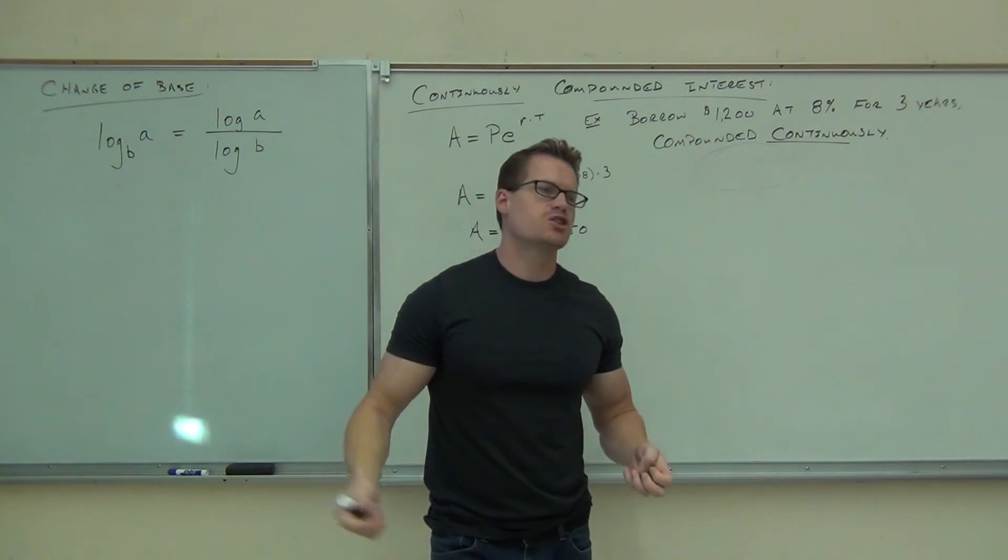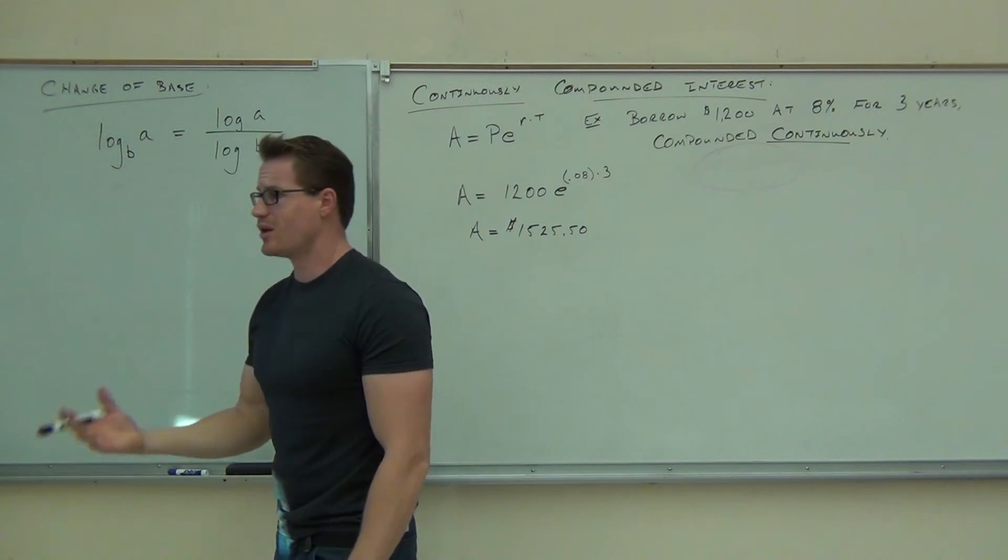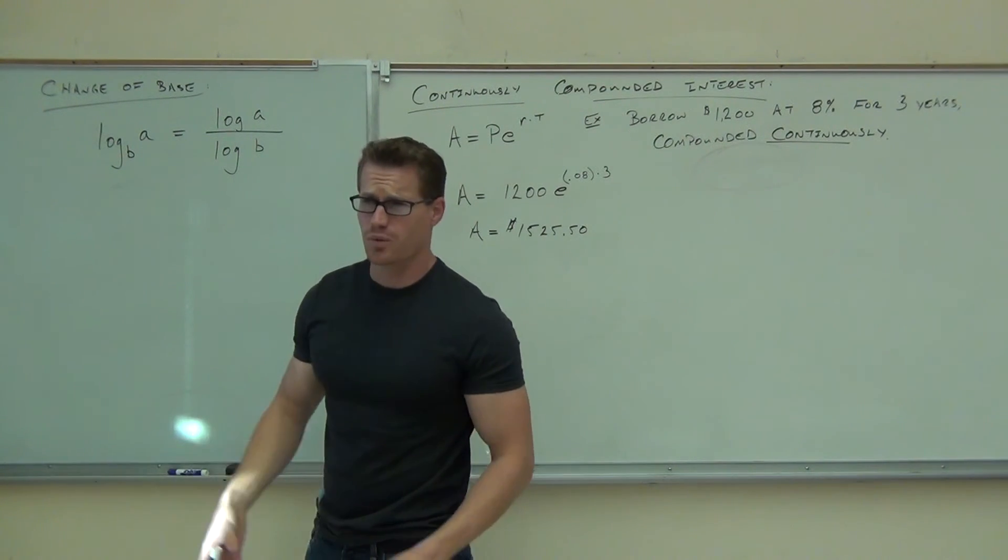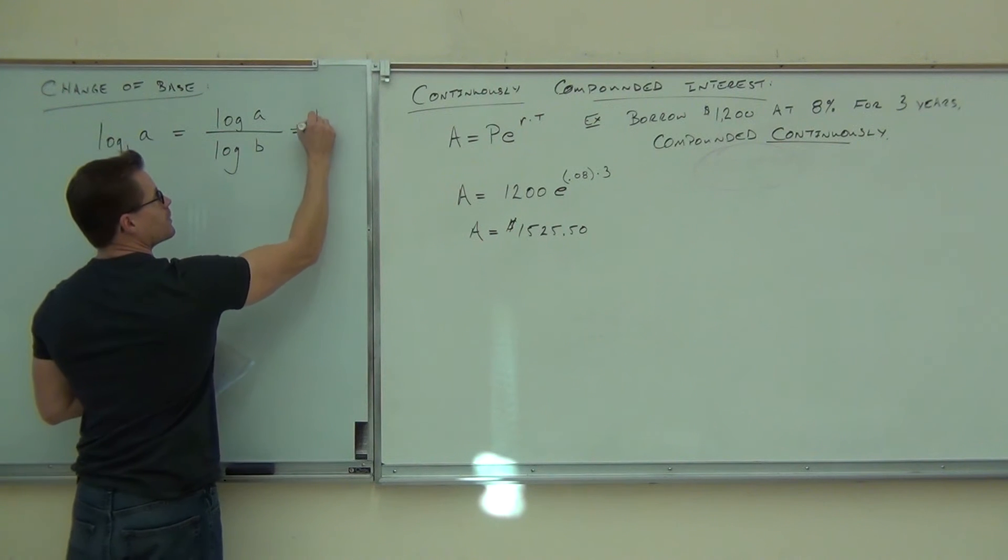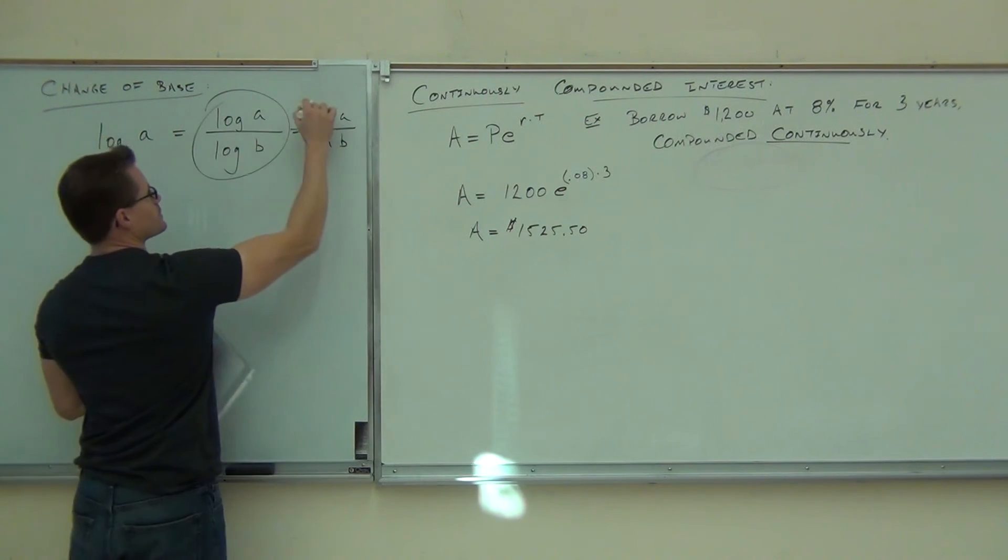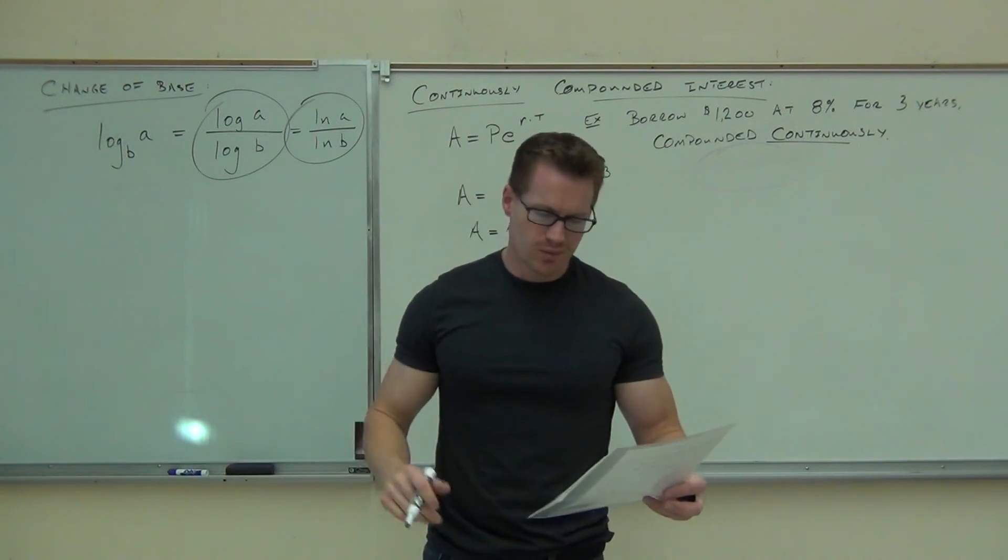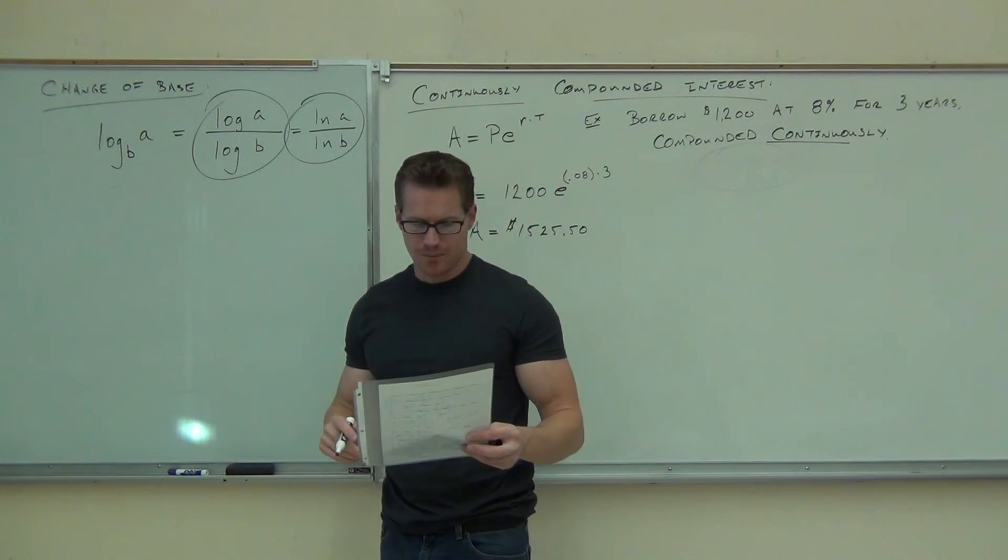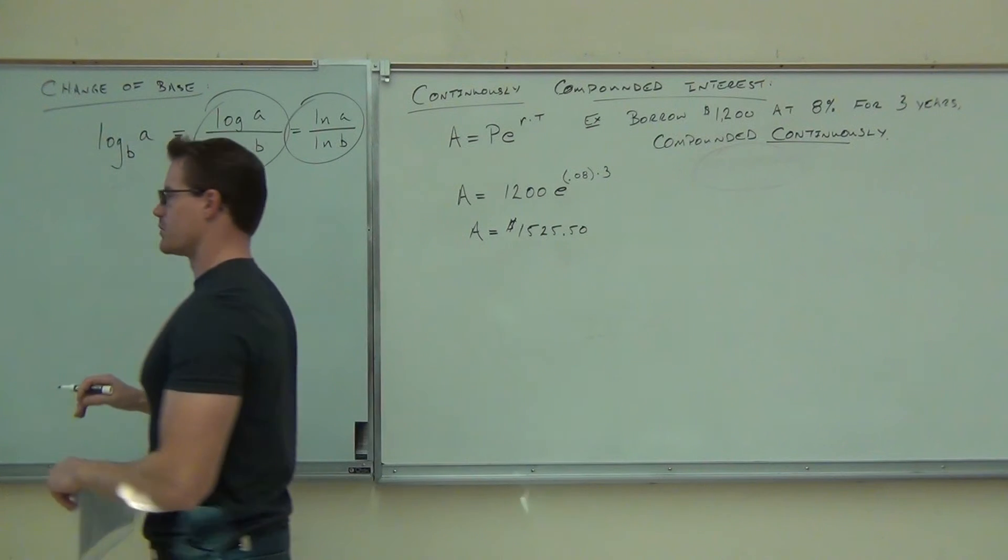You could also change to ln if you want. You're probably not going to choose to change to something like log base 8. I mean, you can't really work with that that well. So it's either this one or this. Either one of these two things. And you know what? They're going to work out exactly the same. So let's go ahead and we'll just do one very quick example. Let's do log base 7 of 5. We're going to change that to a common log and approximate.